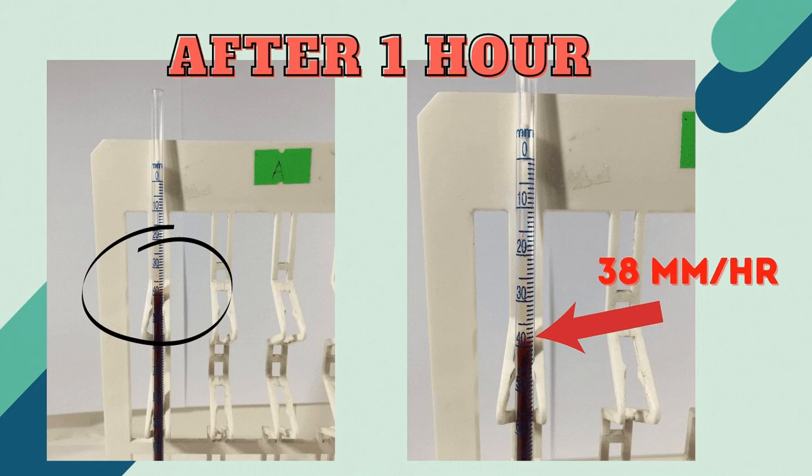After 1 hour, you have to record the number of millimeters the RBCs have fallen and report as millimeters per hour.